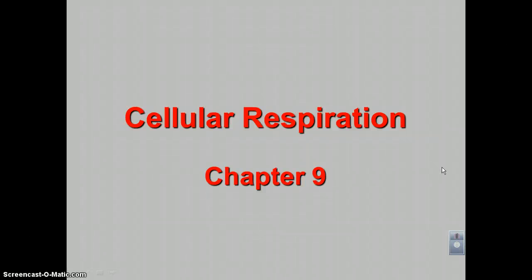Welcome to podcast number one of chapter nine. During chapter nine, we're going to learn about how the cell takes the energy from glucose and converts it into ATP. This is mainly done through a process called cellular respiration. This process will use the organelle, the mitochondria, to do most of the work.